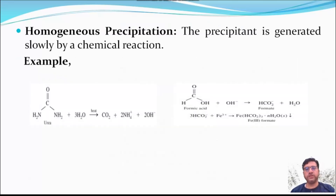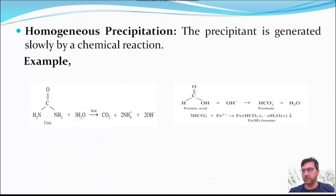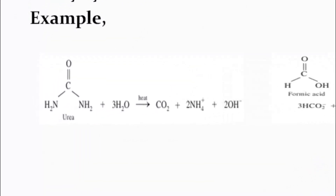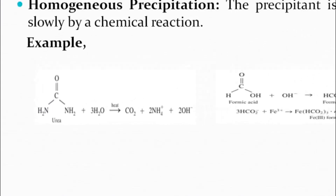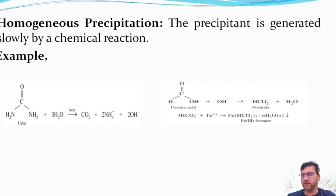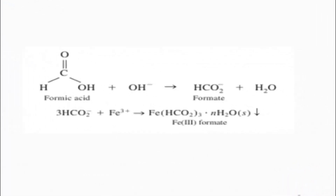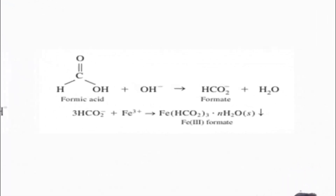Homogeneous precipitation is a process where the precipitate is generated slowly by chemical reaction. For example, urea decomposes in boiling water to produce hydroxide, which increases the pH value. As a result, the particle size of the precipitate increases.